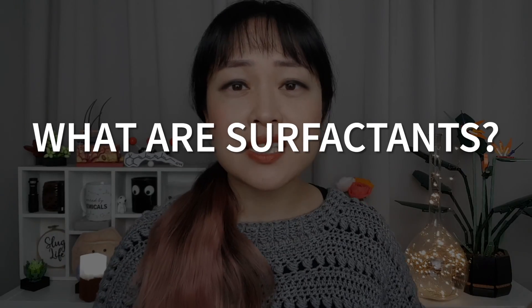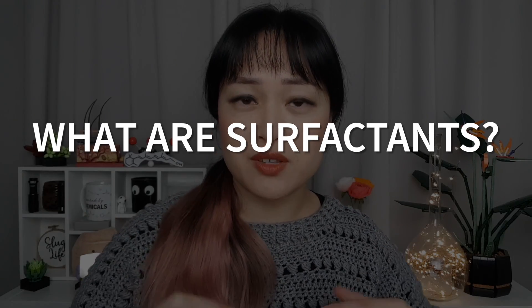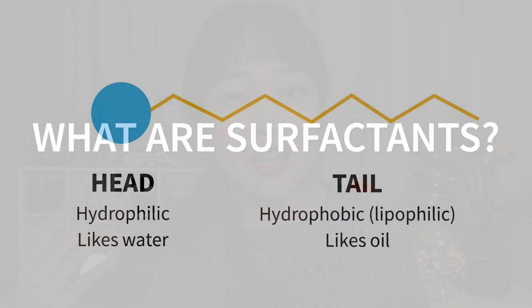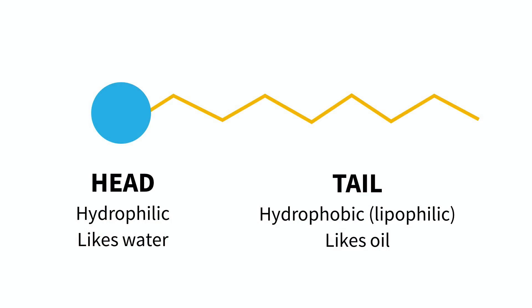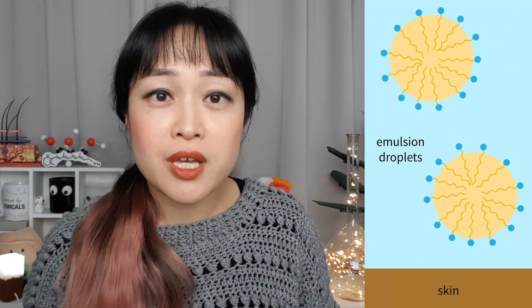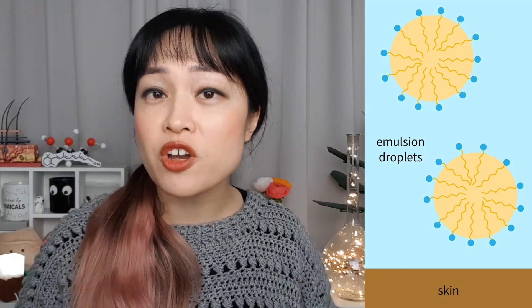The key cleaning ingredients in shampoo are surfactants. Surfactants are really useful because they have a head that likes water and a tail that likes oil. Instead of repelling each other, surfactants allow oil to be smuggled into the water in tiny droplets, which you can then wash away down the drain.